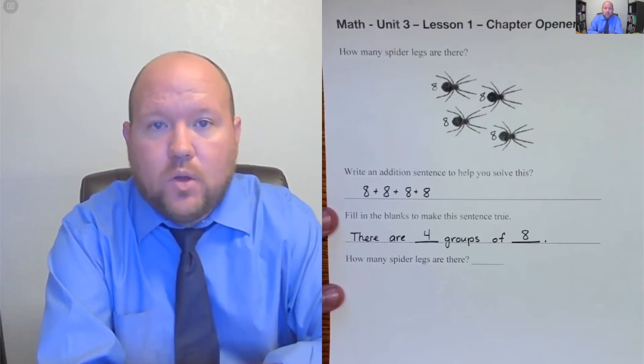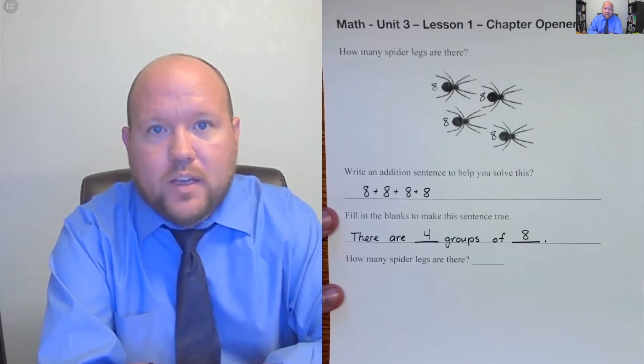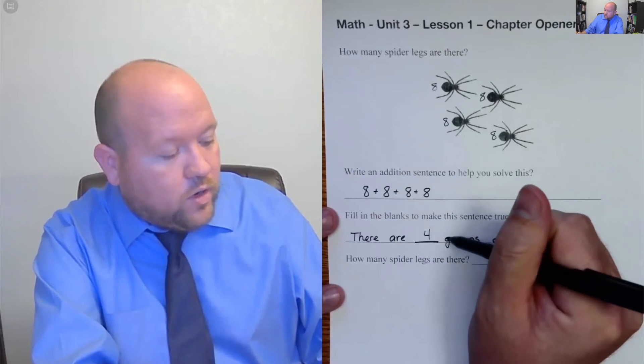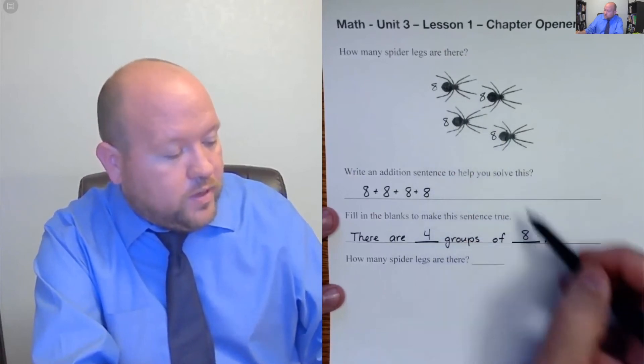You get the same answer, but you're not thinking about it correctly. Here we have four spiders. Each of them represents a group. So there are four groups and in each group, there are eight.